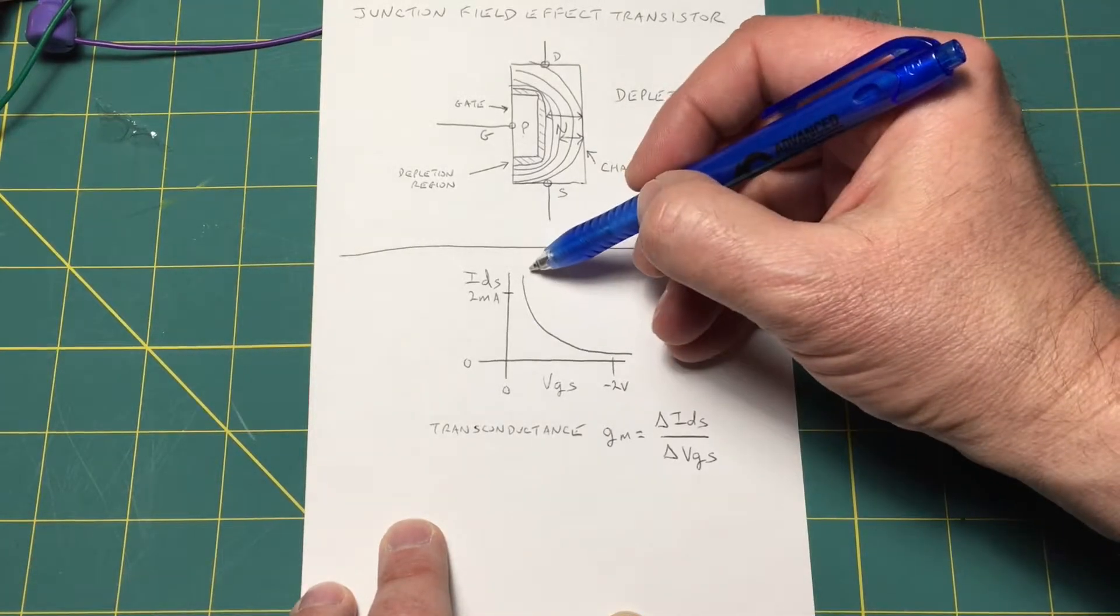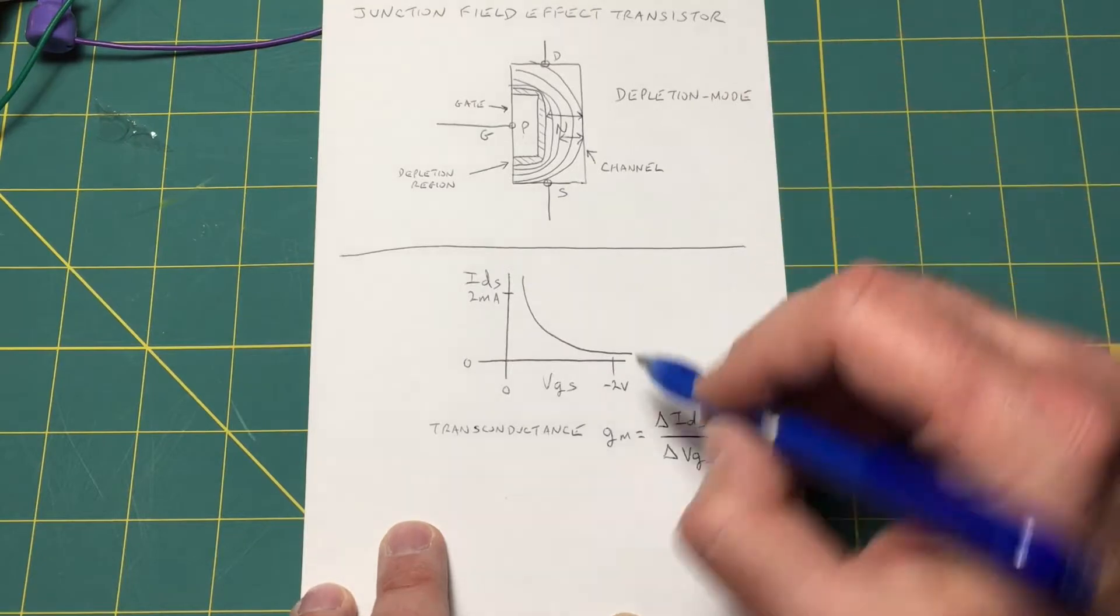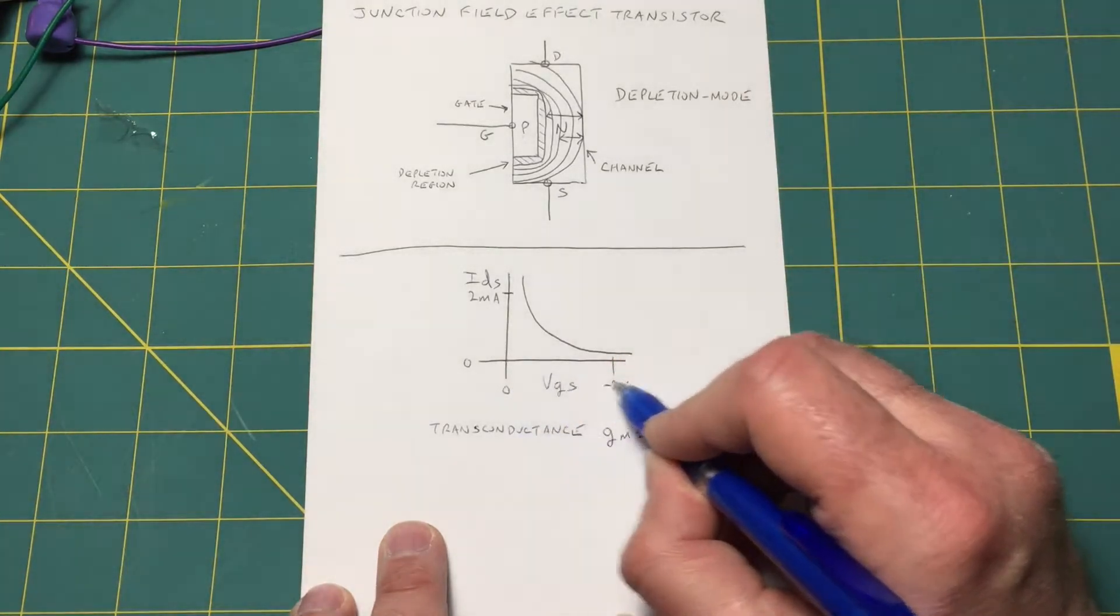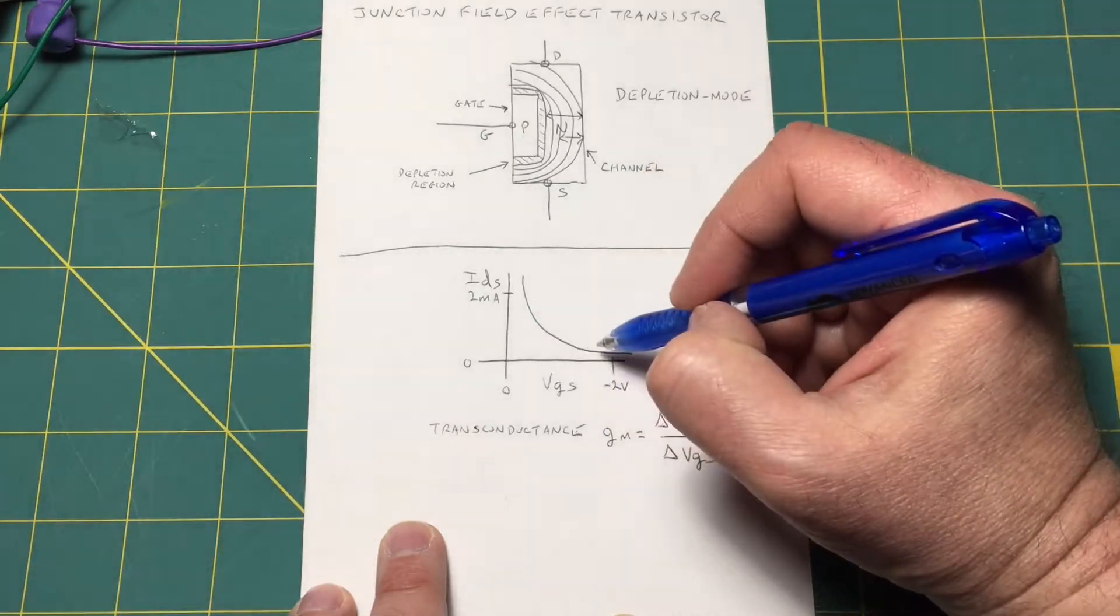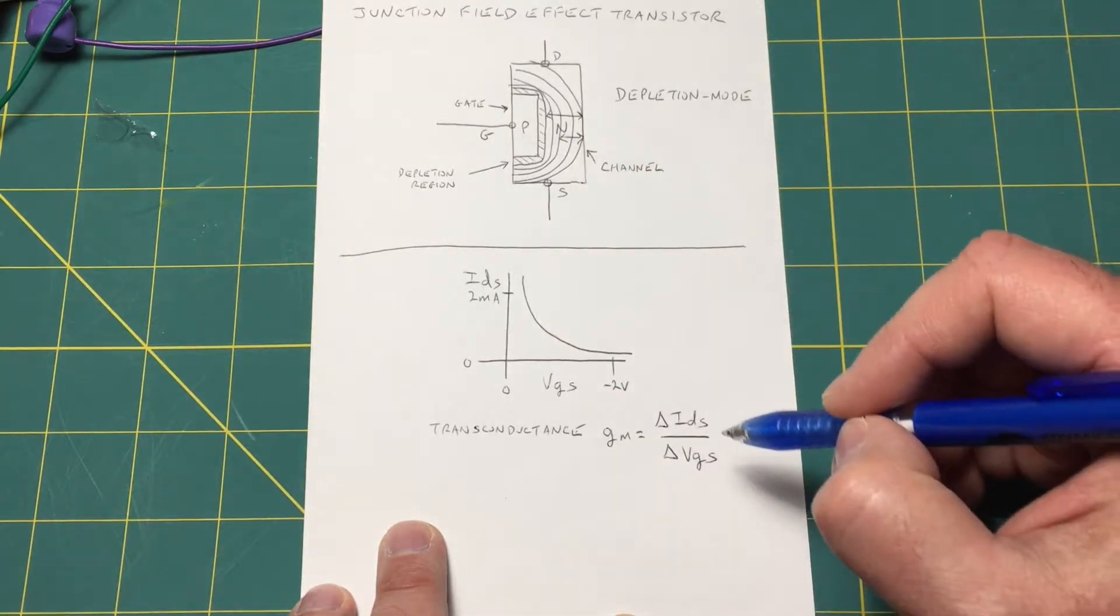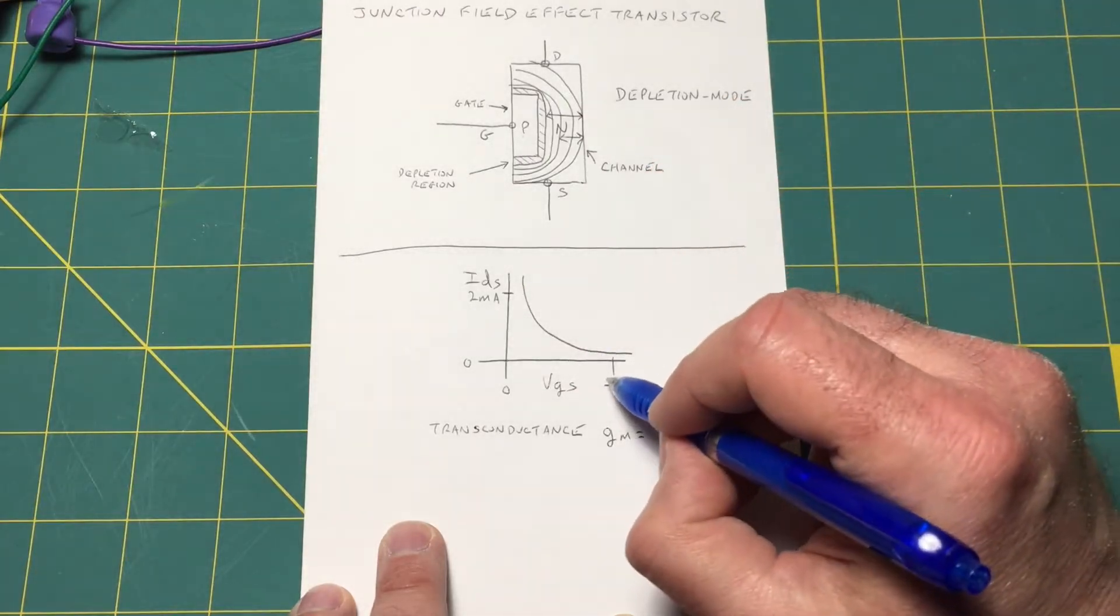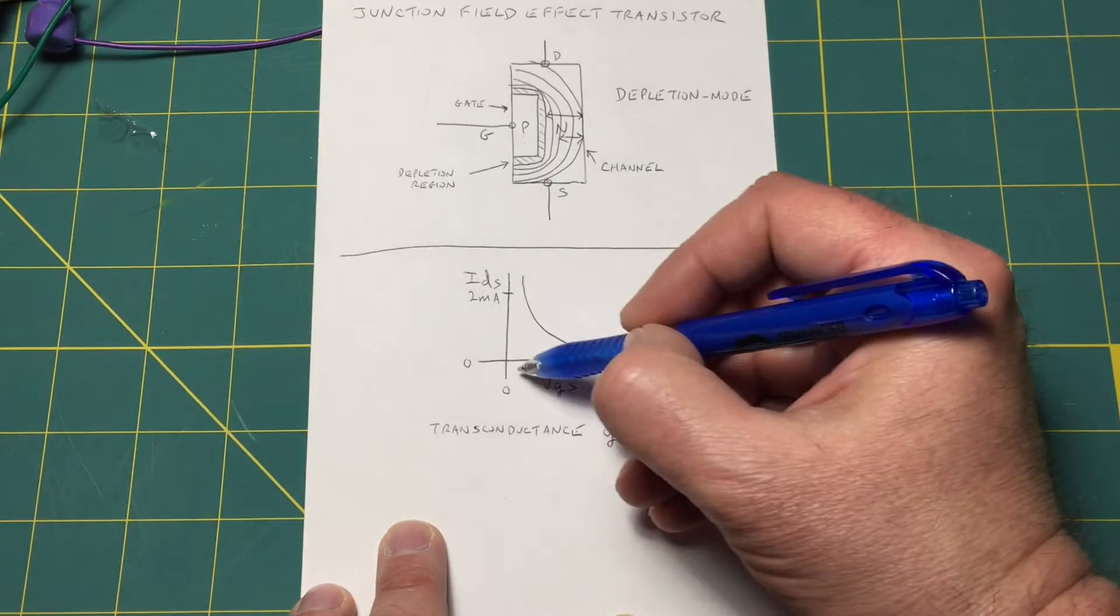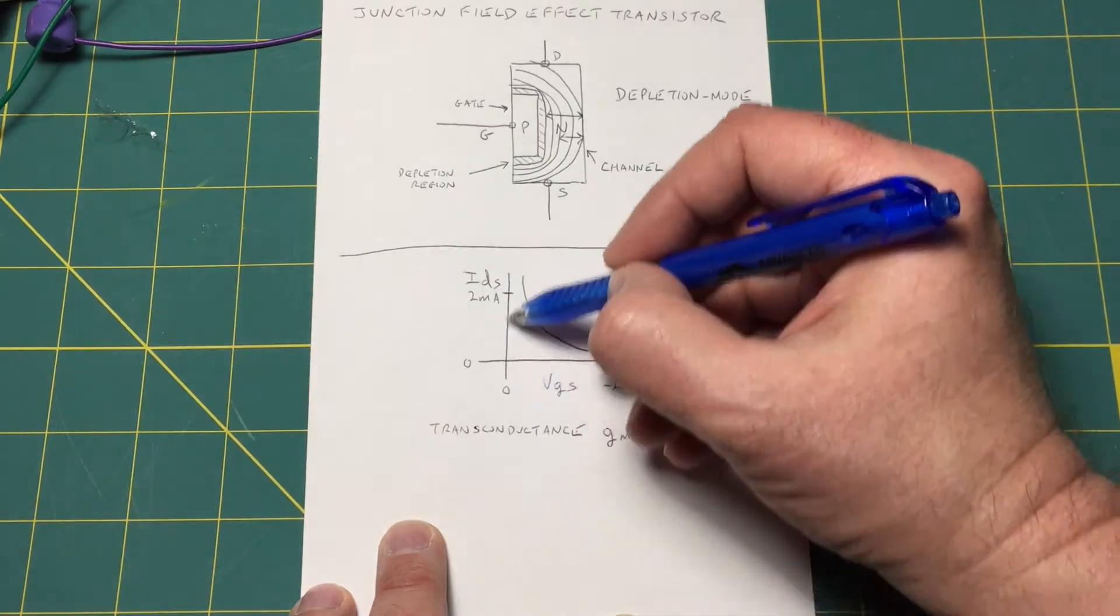And the curve looks something like this. As we take the gate-to-source junction more negative the drain current will decrease. And if we take the gate-to-source voltage less negative or towards zero the drain current will increase.